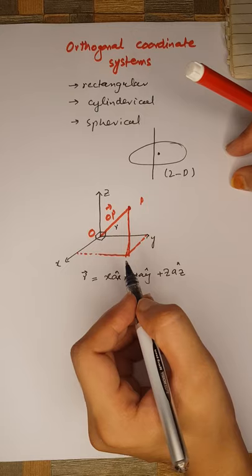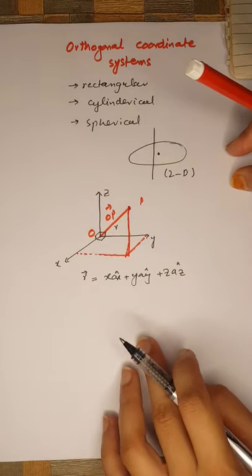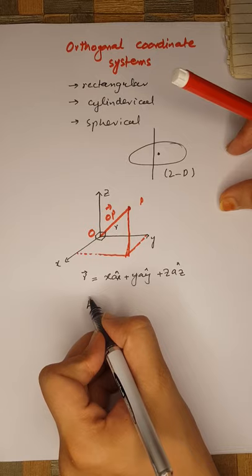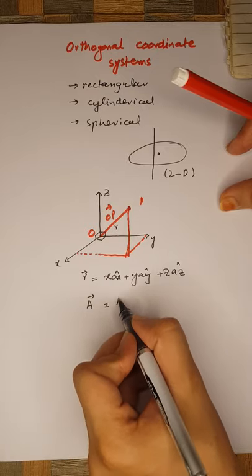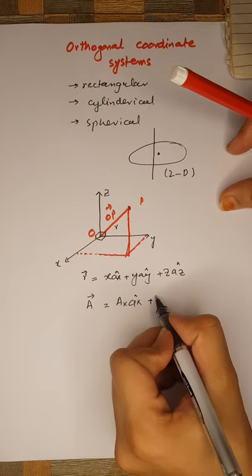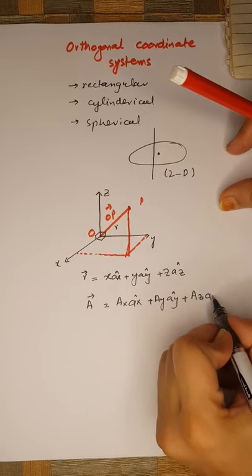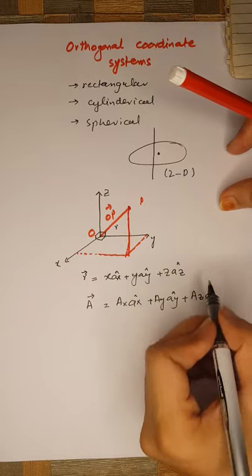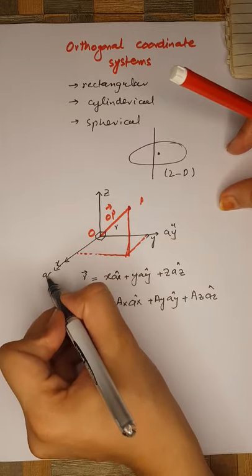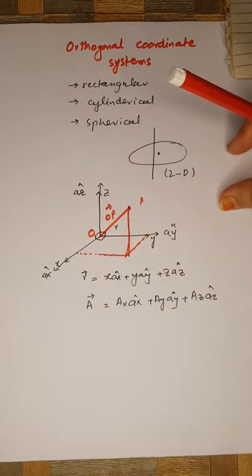A general vector A can be written as Ax·âx + Ay·ây + Az·âz, where Ax, Ay, and Az are the scalar projections of A onto the three axes. The unit vectors associated with each axis are denoted by âx, ây, and âz.